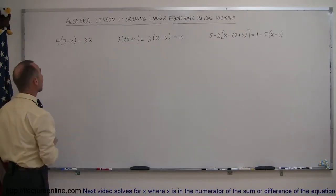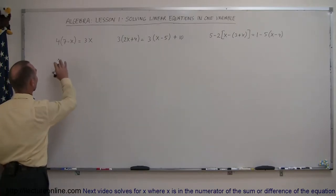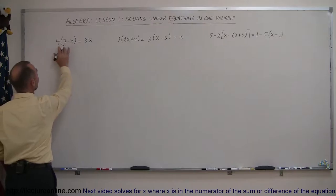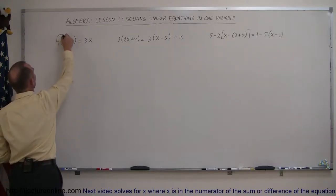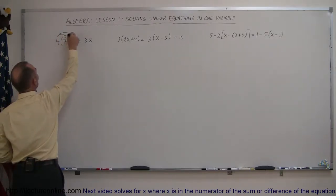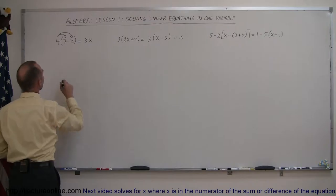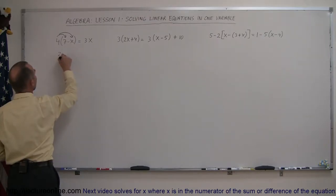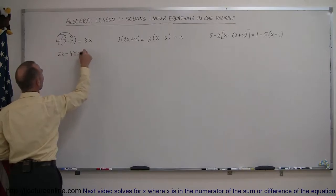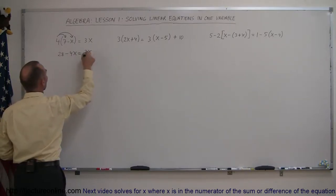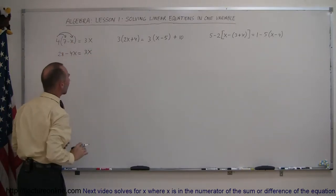Let's look at our first example: we have 4 times the quantity 7 minus x. We're going to distribute the 4 on both the 7 and the x, so we get 4 times 7 which is 28, and 4 times minus x which is minus 4x, equals 3x. So now we've gotten rid of the parentheses.